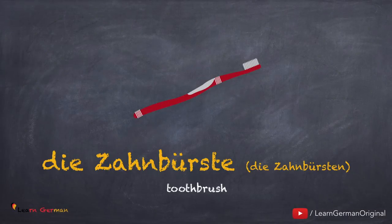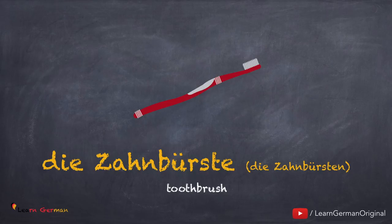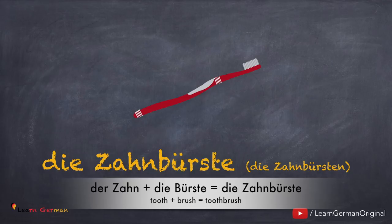Die Zahnbürste, die Zahnbürsten. Noch einmal: die Zahnbürste, die Zahnbürsten. In the German language, it's a very common practice to bring two words together to form one word. For example here, der Zahn plus die Bürste is die Zahnbürste. This concept in German is known as Composita.